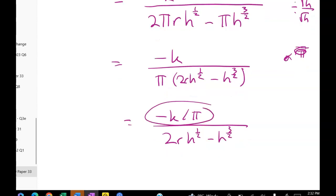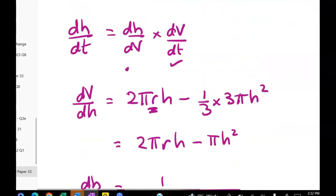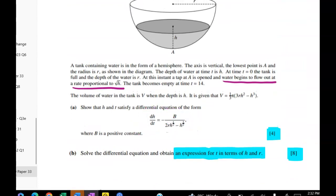And this is just a constant, so we can call that B. B over two R like that, where B is equal to negative K on pi. And that's what we wanted to show. That's the first four marks there. Let's just check that we've got that. Just cleaning this up.